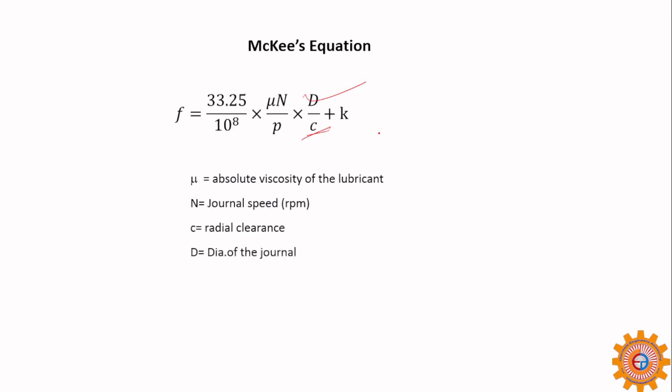The bearing pressure P equals the load acting on the shaft divided by projected area L × D. K is a constant that must be added and cannot be reduced — it represents the minimum friction available in the bearing, and its value is 0.002.